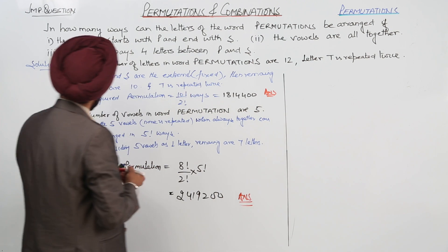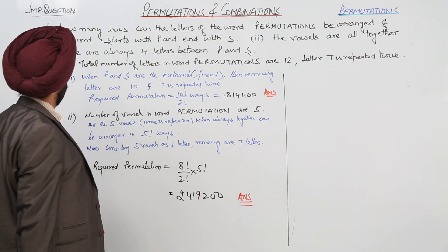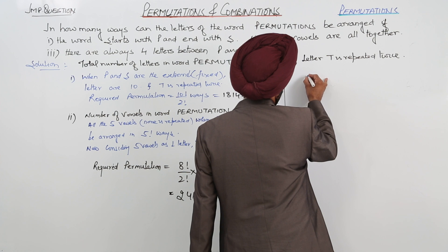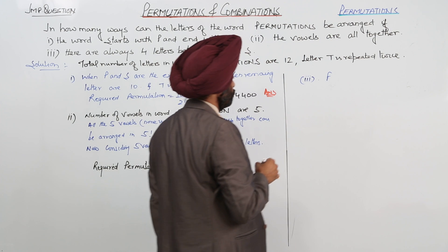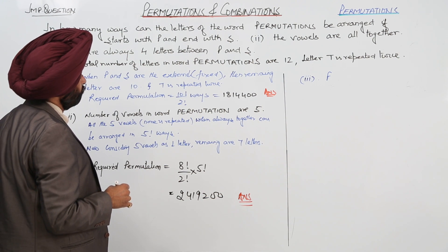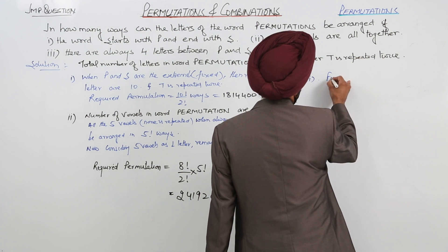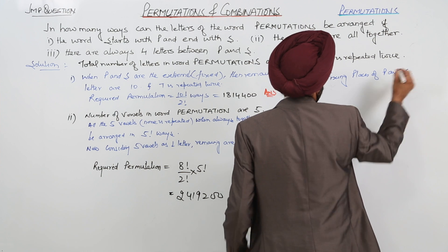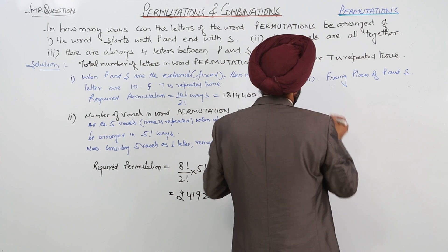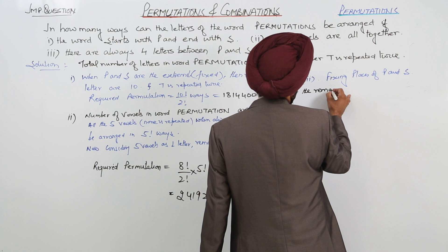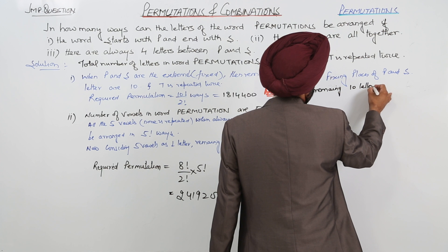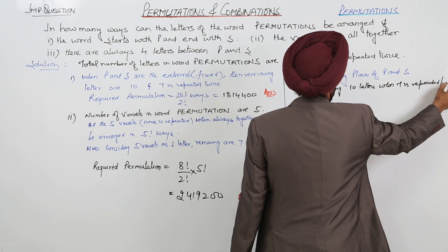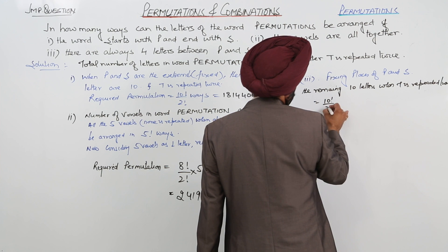Number 3: there are always 4 letters between P and S — a very interesting third part. Fixing the places of P and S, the remaining 10 letters with T repeated twice can be arranged in 10 factorial upon 2 factorial ways.